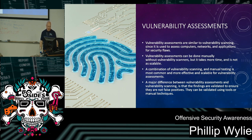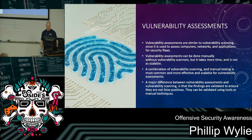Along the lines of false positives, you can also find false negatives — things that have been missed. Using multiple vulnerability scanners and manual techniques helps find those. This step is going to be a lot better at finding true vulnerabilities than just running vulnerability scans, though both are necessary. You follow similar steps, but with validation and some manual testing added.